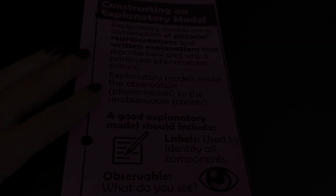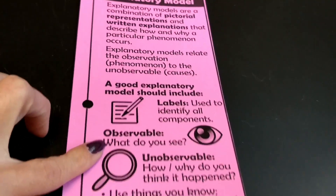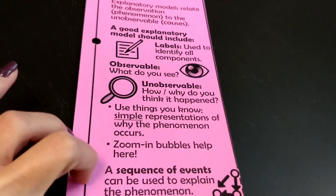It's a card to help my students construct better models. On this card it gives them some ideas for things to include — like they should be including the observable and the unobservable, they should include labels so someone can determine what a model is of, and sometimes using a sequence of events can be really helpful, as well as a zoom-in bubble to illustrate the particulate. Whenever my students are creating any kind of model, I have them keep this out, and I also allow them to use it during tests or quizzes.